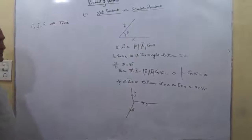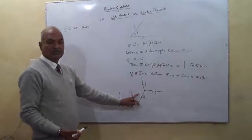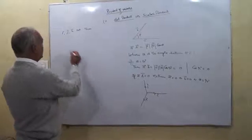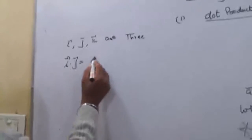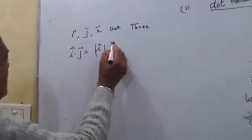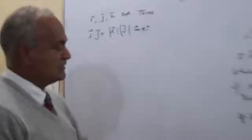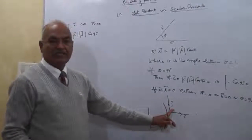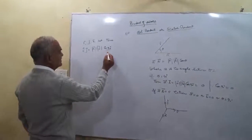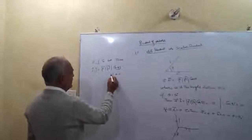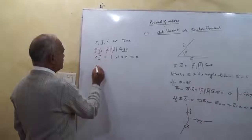There are three unit vectors I, J, K, which are mutually perpendicular to each other. For I dot J: this equals |I| times |J| times cos 90, because the I vector is inclined with the J vector at 90 degrees. Cos 90 is equal to 0, so this equals 1 times 1 times 0, which equals 0. Therefore, I dot J equals 0.